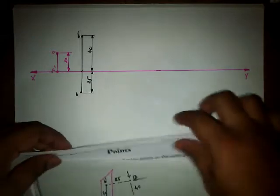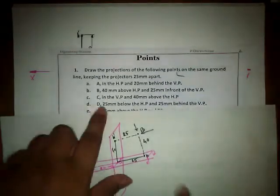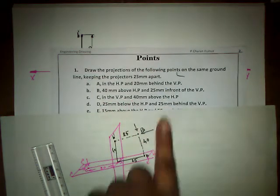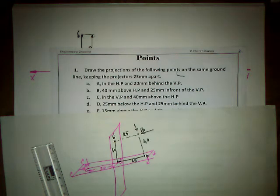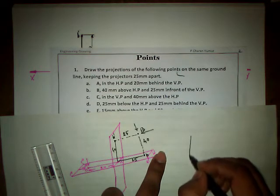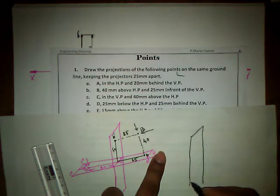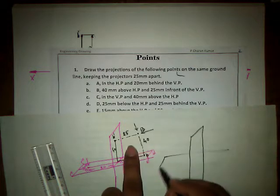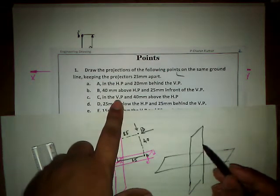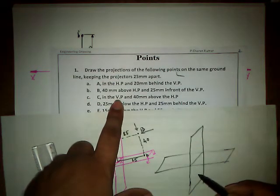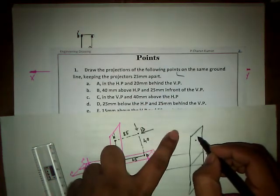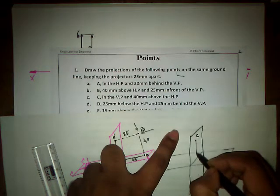Moving to question 3, we have point C which is in VP and 40mm above the HP. The point lies in VP, so it can be either in the first or second quadrant. Since it is above HP, we place it in the appropriate quadrant. The point name is capital C and the distance is 40mm.